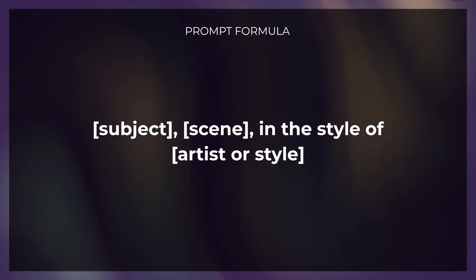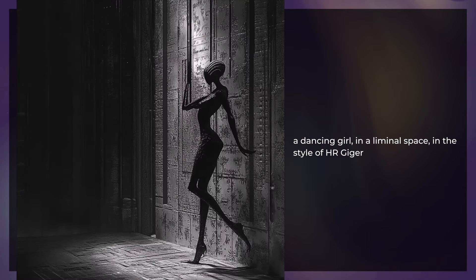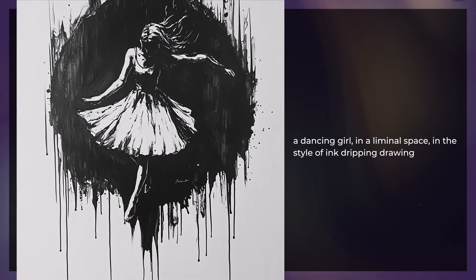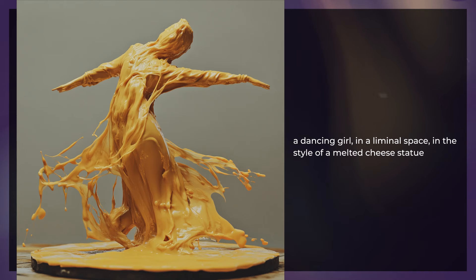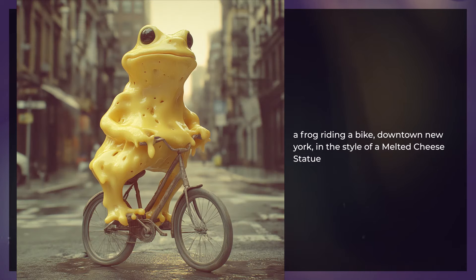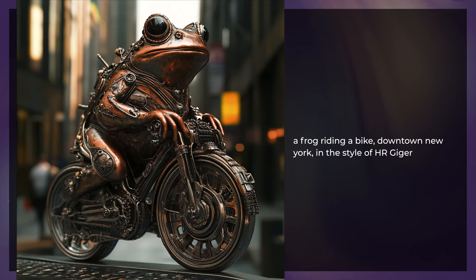Then we have: subject, scene, in the style of artist or style. It's a very powerful way to apply style to an image. Starting with a dancing girl, you can add an artist such as Pablo Picasso or HR Giger, or a genre like surrealism, or describe it more succinctly with something like 'ink dripping drawing', or something unique like 'in the style of a melted cheese statue'. Switch to a frog riding a bike with Pablo Picasso and you get a really cool style — and even the HR Giger style creates a very unique image when applied.